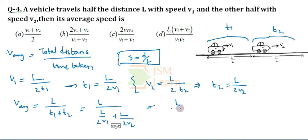So, taking common, we can get L by 2 of 1 by V1 plus 1 by V2. So, on taking LCM to both, we will get here L, L cancel and this 2 comes up. So, we will get 2 V1 V2 by V1 plus V2.